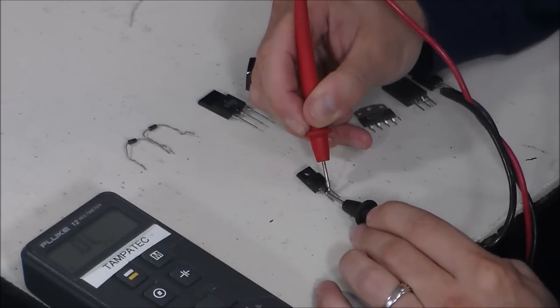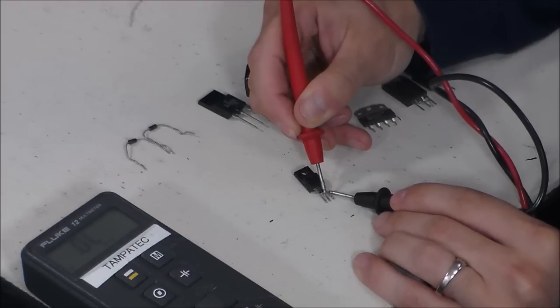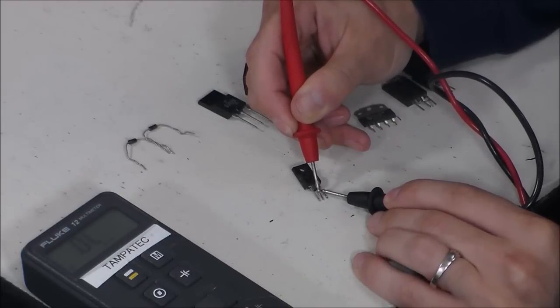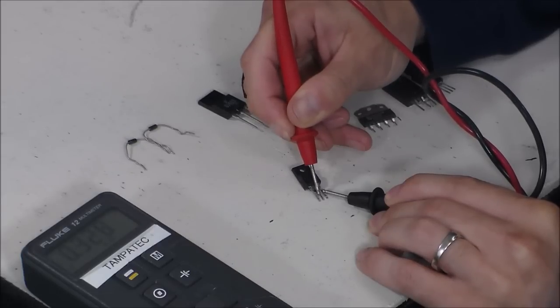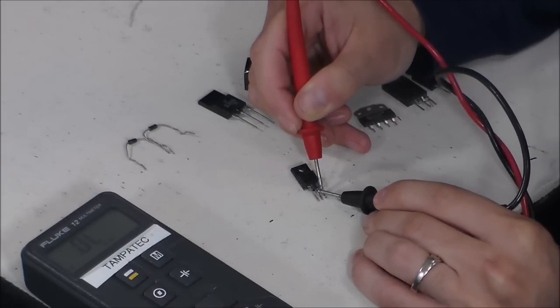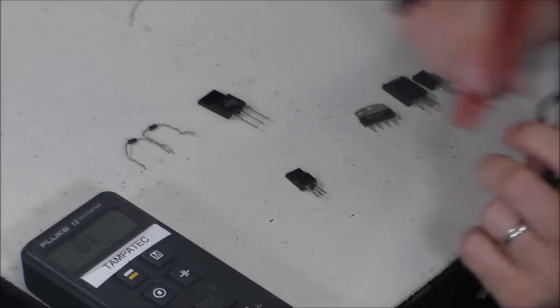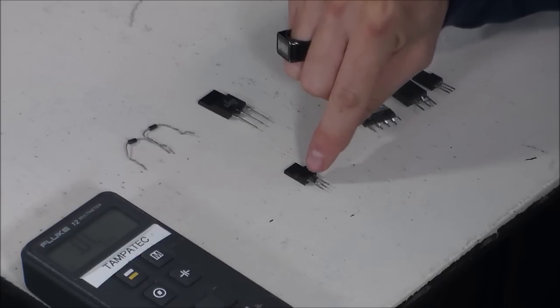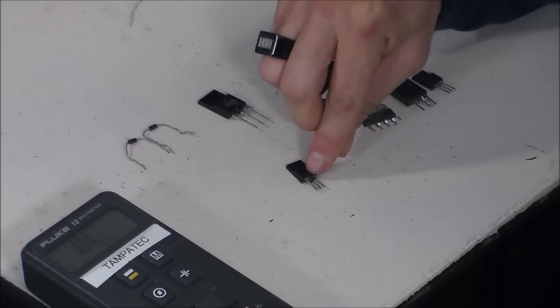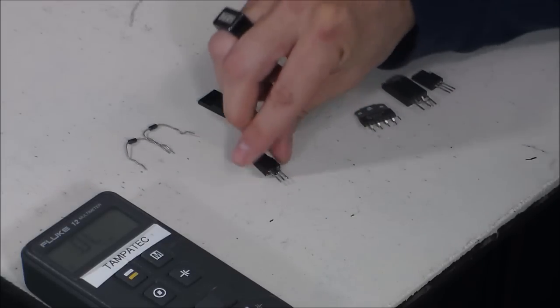And then I put my meter right here in the middle. And I get a reading, 0.3 this way. And then I reverse it, and I get a reading again, 0.2. So this is definitely bad. So you're getting voltage going back and forth. On the right side, and on the left side, it's wide open. So this is definitely a bad transistor.